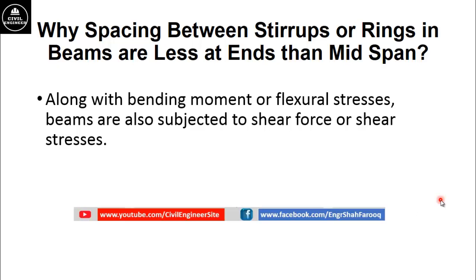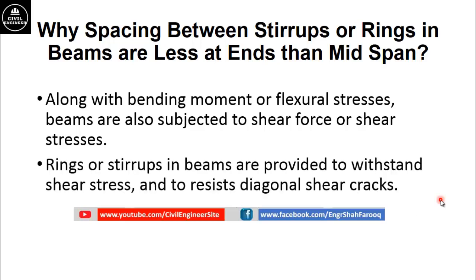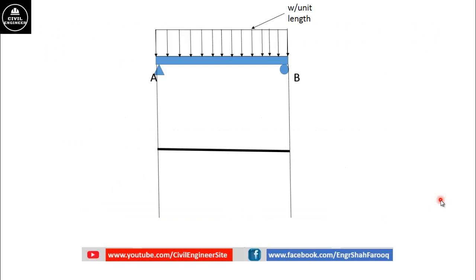Beams are also subjected to shear force or shear stresses. And rings or stirrups in beams are provided to withstand shear stresses and to avoid or resist diagonal shear cracks.